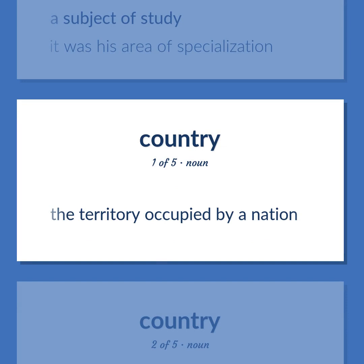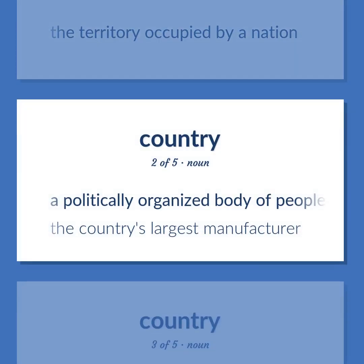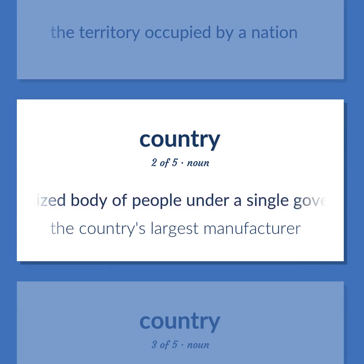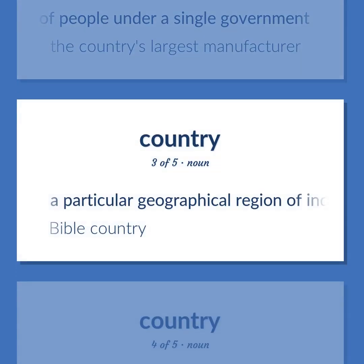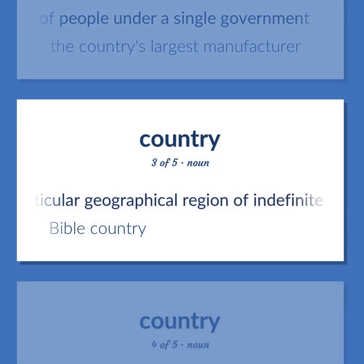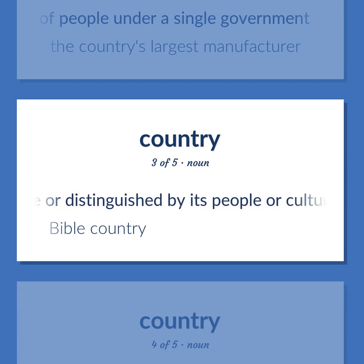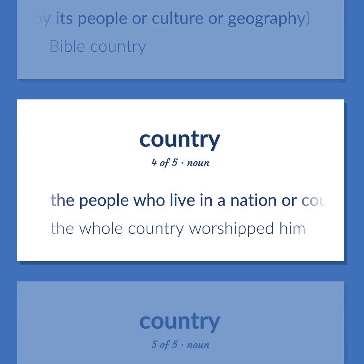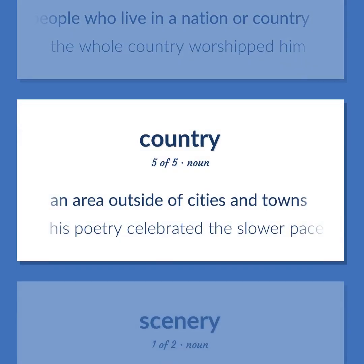Country: the territory occupied by a nation. A politically organized body of people under a single government — the country's largest manufacturer. A particular geographical region of indefinite boundary — Bible country. The people who live in a nation or country — the whole country worshipped him. An area outside of cities and towns — his poetry celebrated the slower pace of life in the country.